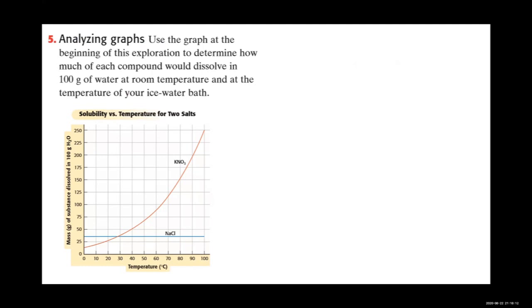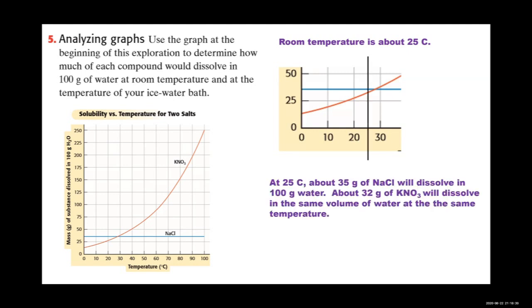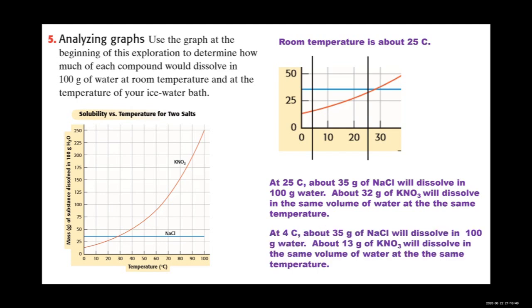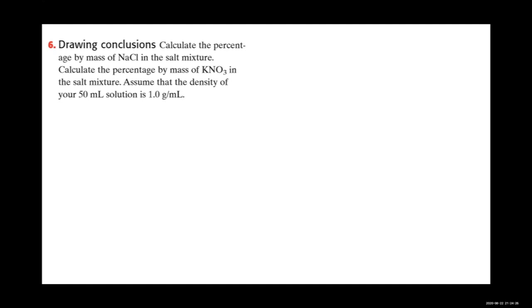Analyzing graphs: Using the graph from the beginning of the lab, at room temperature (about 25°C) approximately 35 grams of sodium chloride and about 32 grams of potassium nitrate will dissolve in 100 grams of water. At 4°C (our ice bath temperature), about 35 grams of sodium chloride will still dissolve in 100 grams of water, while only about 13 grams of potassium nitrate will dissolve at that temperature.